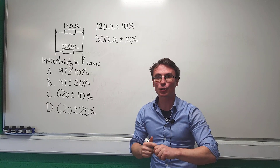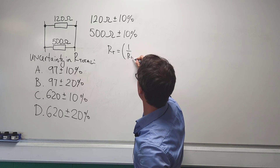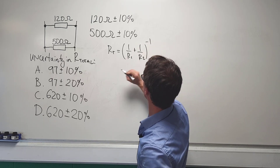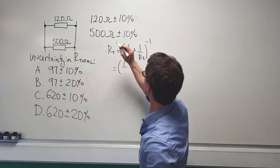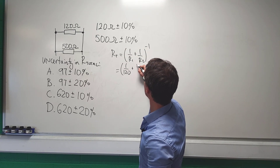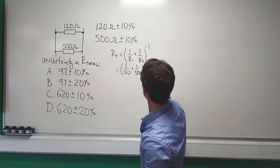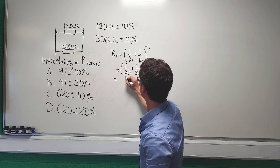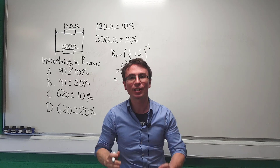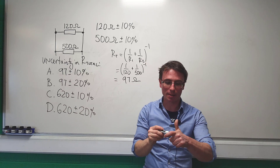First of all, let's find the total resistance. R total equals (1/R1 + 1/R2) to the power of minus 1, which is (1/120 + 1/500) to the power of minus 1, which equals 97 ohms. So we know the correct answer will be either A or B.